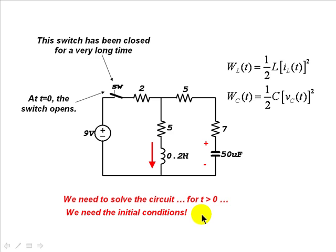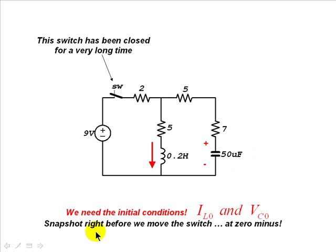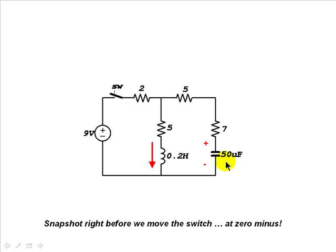We need the initial conditions: IL(0) and VC(0) — the initial current in the inductor and the initial voltage on the capacitor. The snapshot right before we move the switch at t equals zero-minus is necessary to find those ICs. Because the switch has been closed for a very long time, the circuit is in DC steady state, meaning the inductor behaves as a wire and the capacitor as an open circuit.